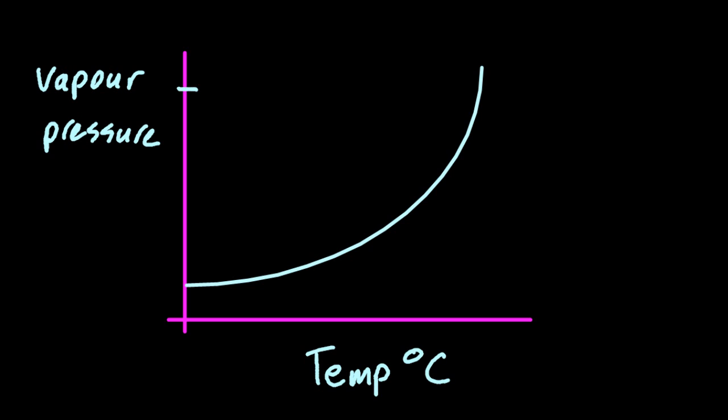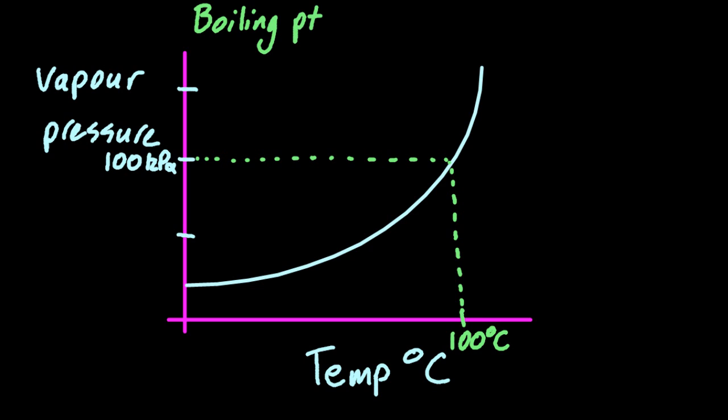It's unclear at the moment how much of this vapor pressure knowledge you need to know. No one's quite sure. But the basics are when the vapor pressure of a substance equals atmospheric pressure, it will boil. So the classic example is water. When the vapor pressure of water equals 100 kilopascals, the temperature is 100 degrees and the water will indeed boil.